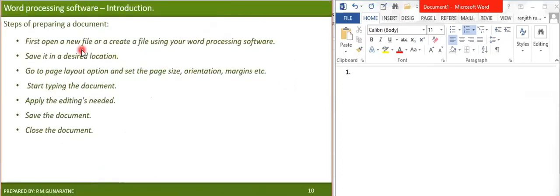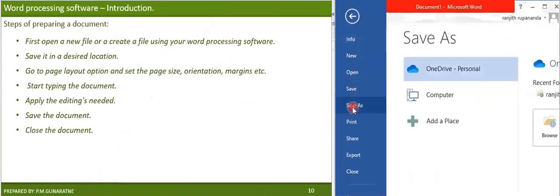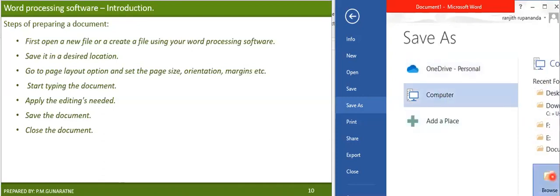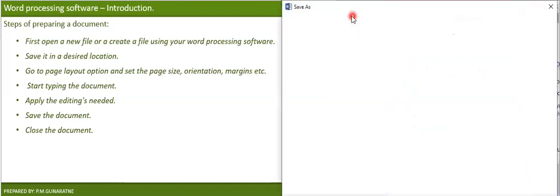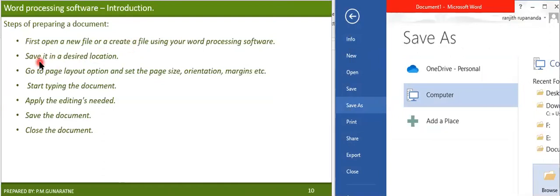These are the basic steps for preparing a document. First, open or create a new file using your word processing software. Then save it in the desired location — you can go to File and click Save As, and it will allow you to select a place to save the document. You have to open the file and save it in a certain location as the first step.